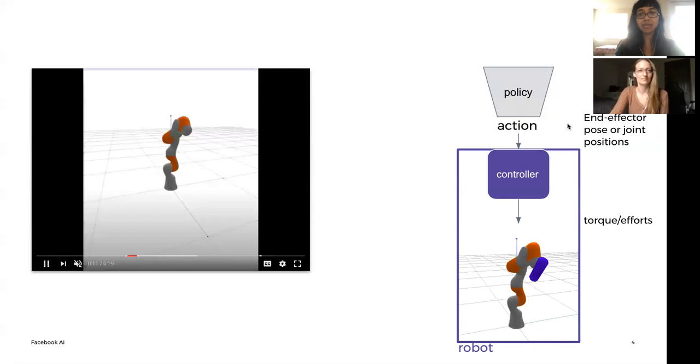In this example, the green line extending from the robot's end-effector shows the action trajectory it's supposed to follow. Without an object in hand, the controller is able to execute this trajectory perfectly.